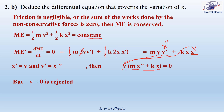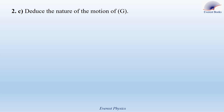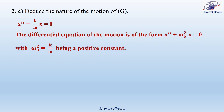The solution v equals 0 is rejected because if v equals 0, we have no motion, but this is not the case. So the acceptable solution is mx″ plus kx equals 0. Dividing both sides by m, we get the second-order differential equation: x″ plus (k/m)x equals 0. This differential equation is of the form x″ plus ω₀² x equals 0, with ω₀² equal to k/m being a positive constant.